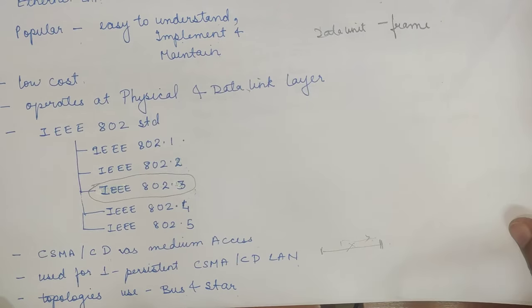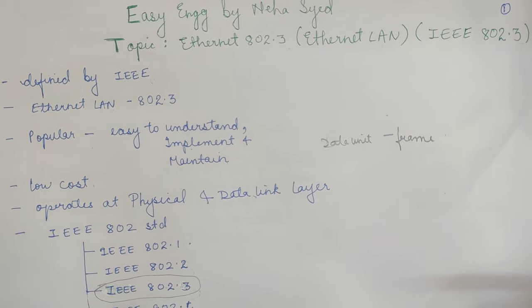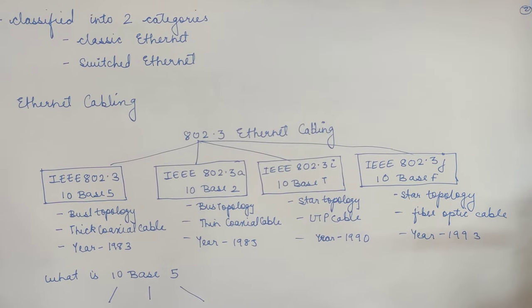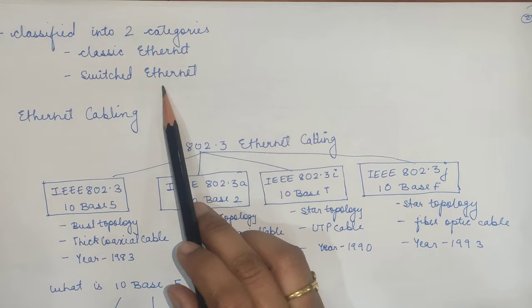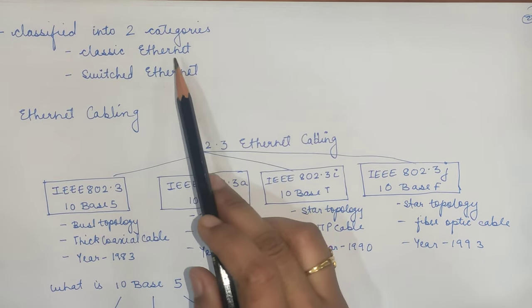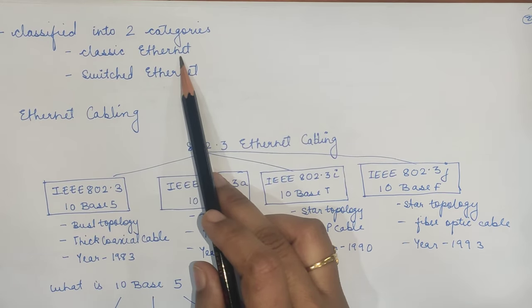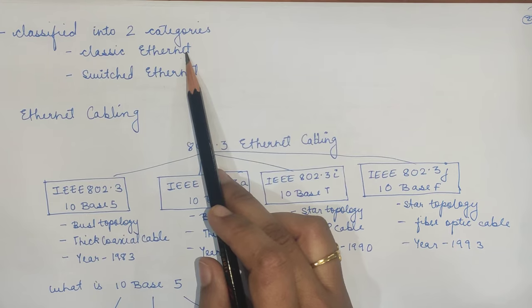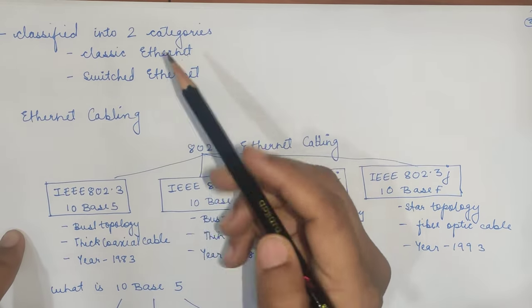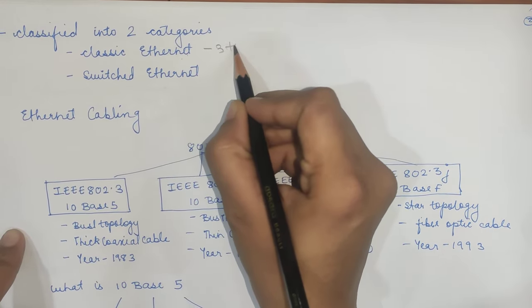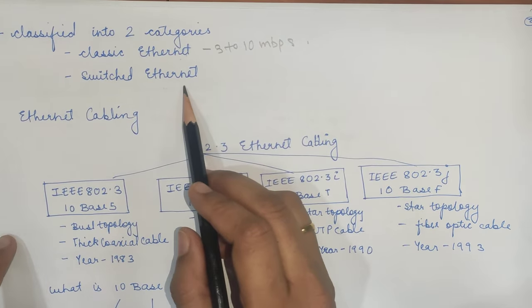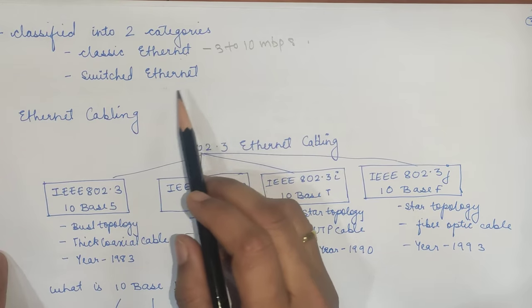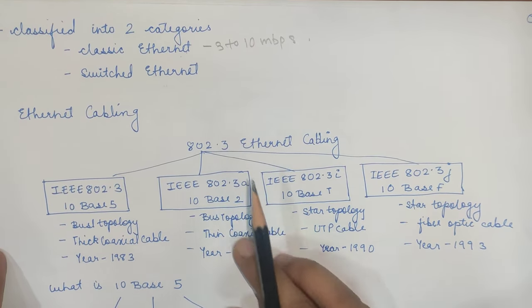There are actually two main categories for Ethernet LAN. The first is Classic Ethernet and the second is Switched Ethernet. In Classic Ethernet, it provides a data rate between 3 to 10 Mbps. In Switched Ethernet, it uses a switch to connect two different stations within the respective LAN.